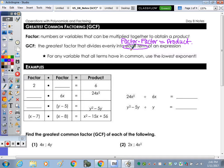So if it's a trinomial, the GCF of the trinomial is a number or a variable that goes into all the terms of the trinomial. And then for any variable that all terms have in common, we use the lowest exponent.